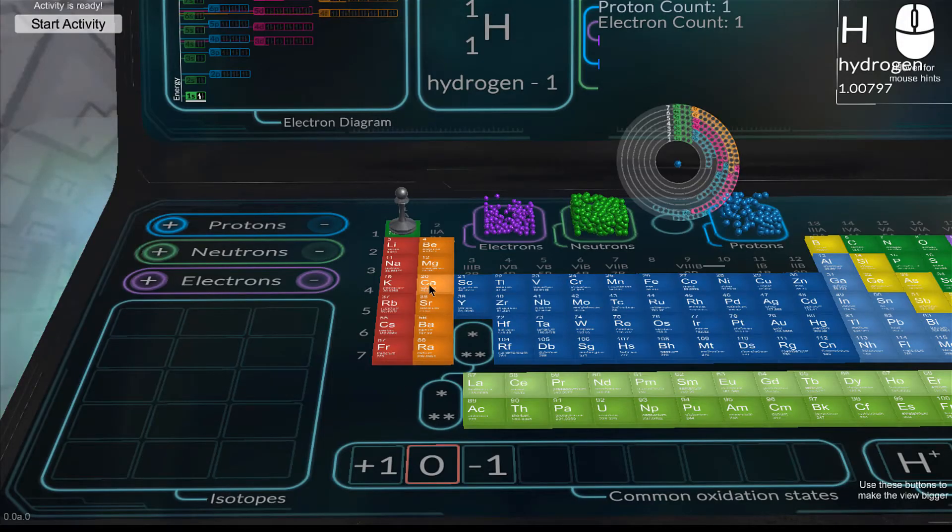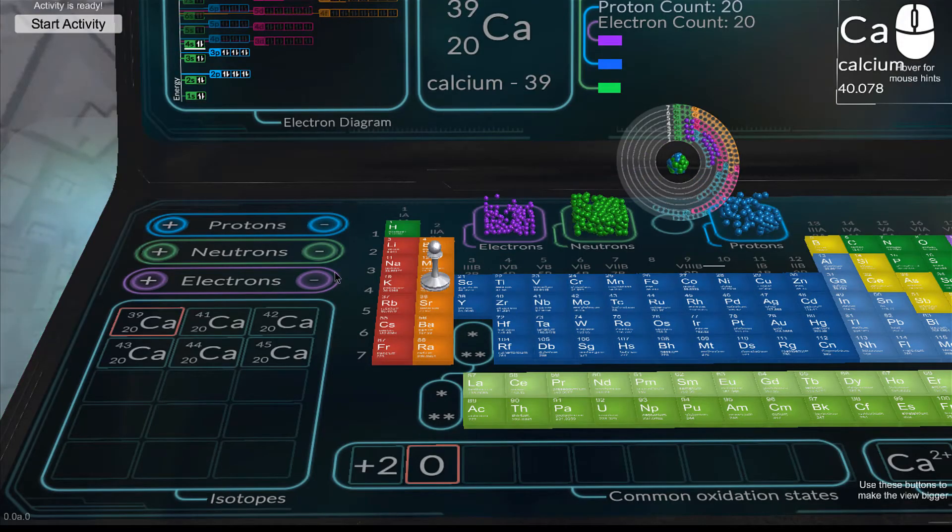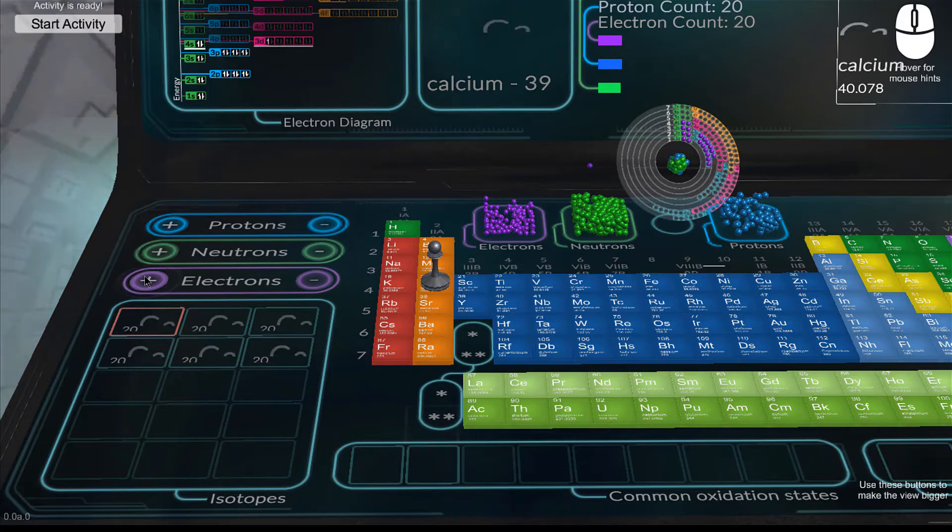The Atom Builder provides an in-depth look at each element, including its subatomic particles, electron configurations, and isotopes.